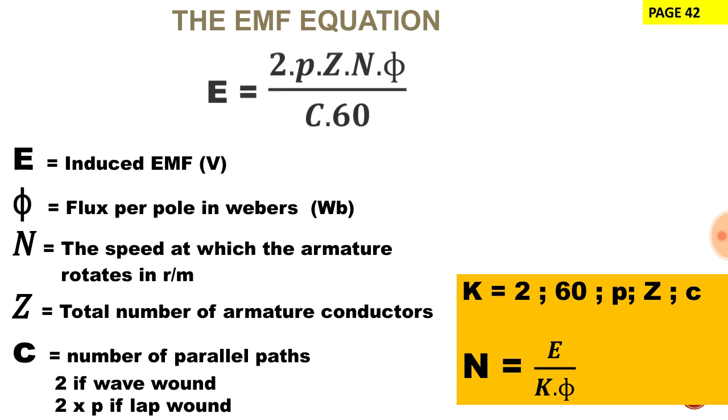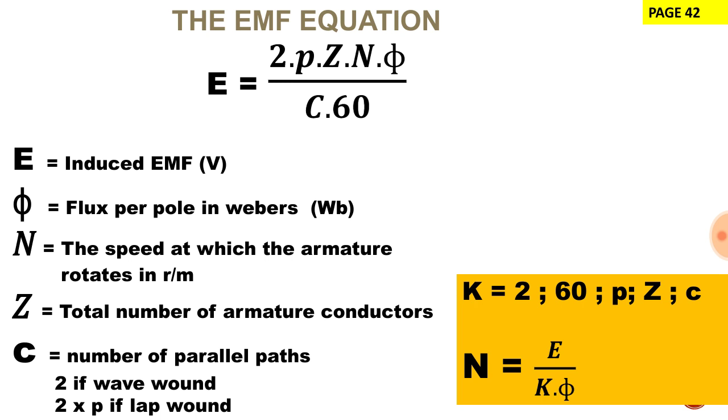This equation is available to us on our formula sheet so you don't have to memorize it. Now to look at each component in this formula. E represents the induced EMF and this is the EMF that is generated by the armature inside our machine.